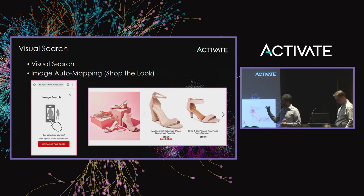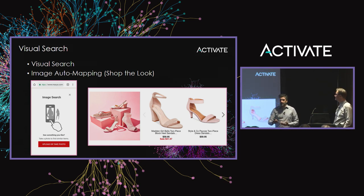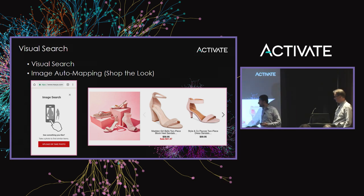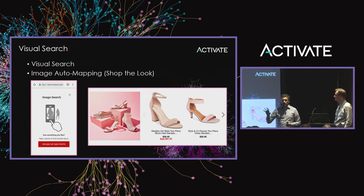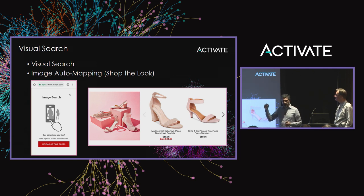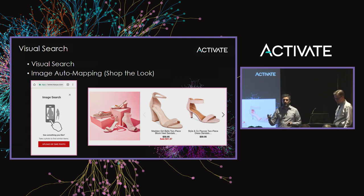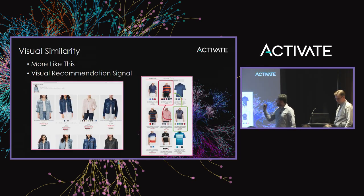Visual search is pretty obvious — a customer shows an image and sees products discovered based on that image. Another flavor is that in retail we usually have cool image assets like banners. We can parse that image, recognize it, and propose to the customer the viable products depicted on that banner.